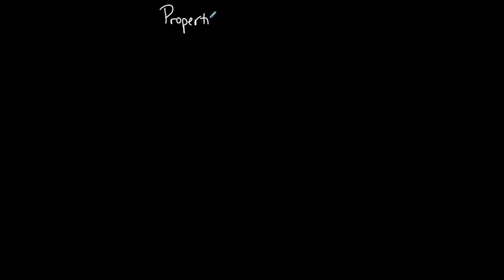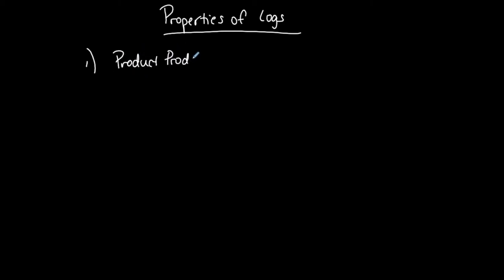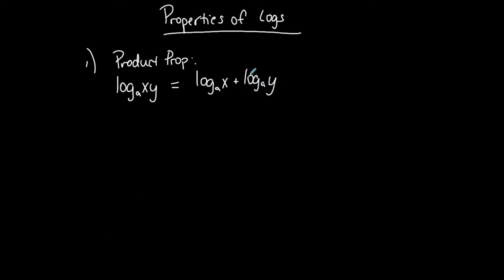I want to talk about the properties of logs. In my other video I talked about the basic properties of logs. These are the main properties of logs. The first is the product property of logs: the log of any base of a product X times Y can be rewritten as a sum of separate logs. A single log of a product can be rewritten as the sum of two separate logs. I'm sure you've seen these before in algebra.